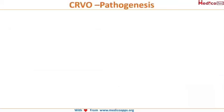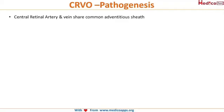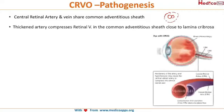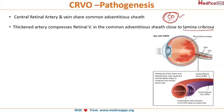Now let's see the pathogenesis of CRVO. The central retinal artery and vein share a common adventitious sheath — they are wrapped together. Whenever there is thickening of the artery due to any reason, it compresses the retinal vein within this adventitious sheath. However, this does not occur throughout the length of the vessels; it occurs where the sheath becomes the narrowest, that is, close to the lamina cribrosa, where the sheath along with the vessels becomes very much compressed anatomically. So that area is more predisposed to the occurrence of central retinal vein occlusion.